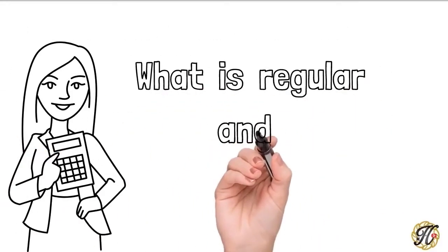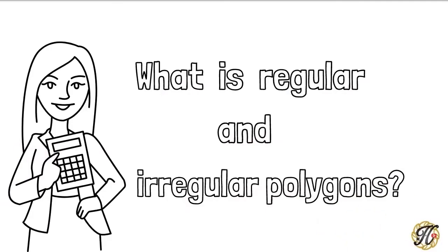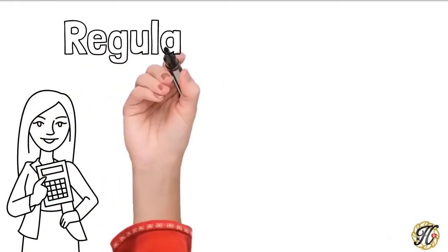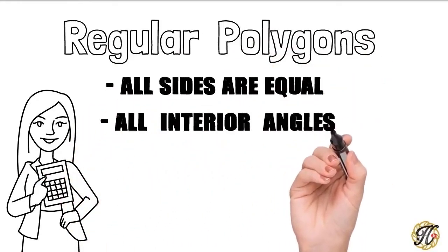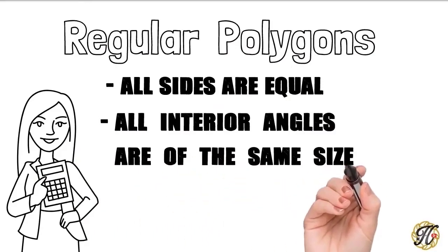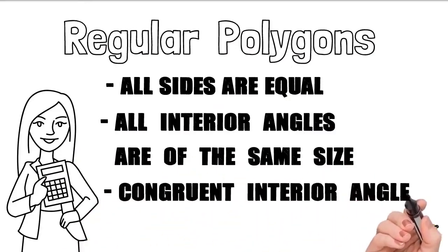What is Regular and Irregular Polygons? Regular Polygons are polygons for which all sides are equal and all interior angles are of the same size. Regular Polygons have congruent interior angles.